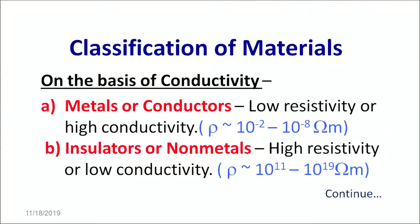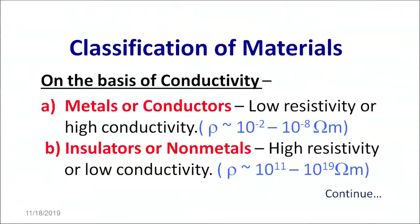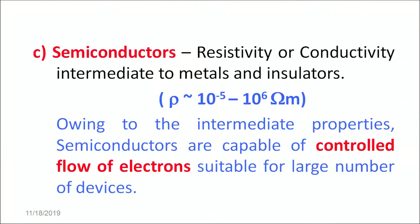Another class of materials are insulators or non-metals. These insulators or non-metals like boron, carbon, silicon — they have very high resistivity and low conductivity. The resistivity is of the order of 10 raised to the power 11 to 10 raised to the power 19 ohm meters. The third class of materials, which we are focusing on today, are semiconductors. These have resistivity or conductivity lying intermediate to the metals and insulators. Owing to this intermediate property, semiconductors are capable of controlled flow of electrons, enabling them to be used for a wide number of devices.